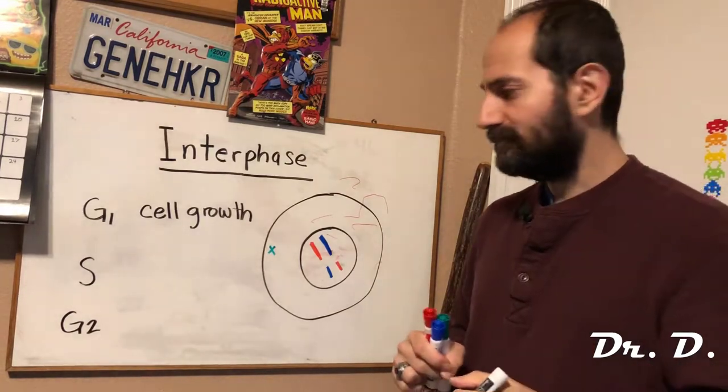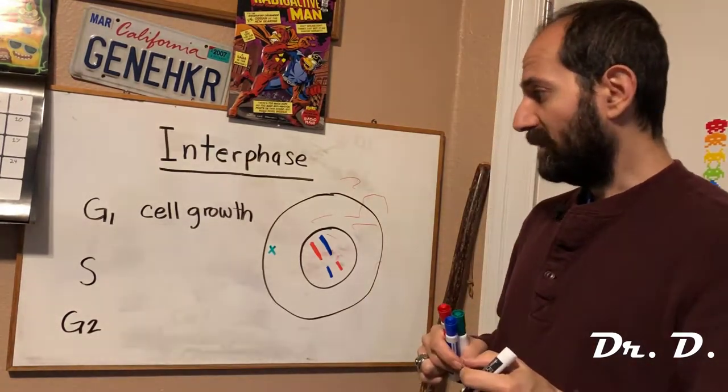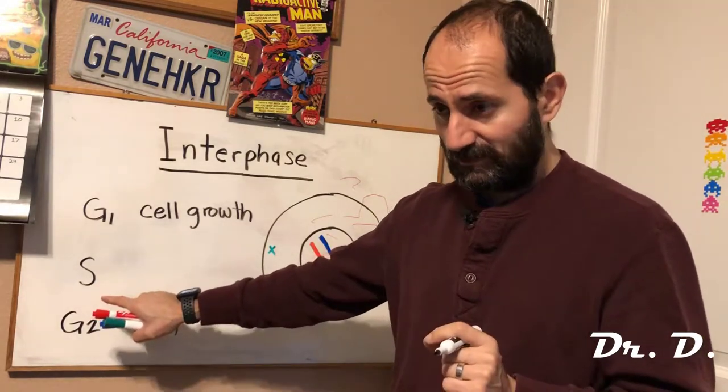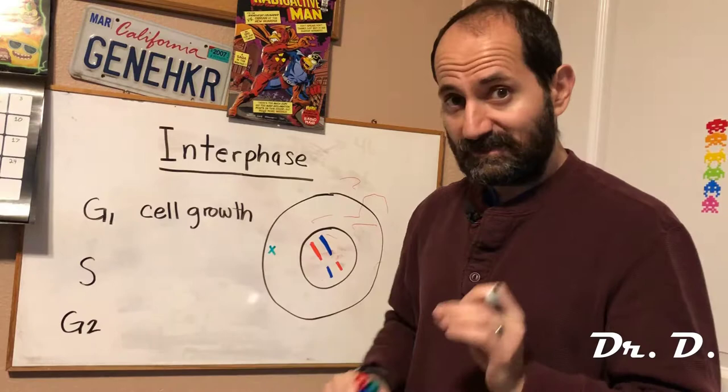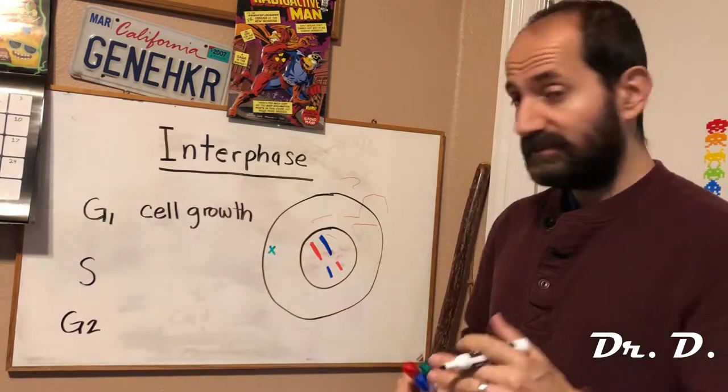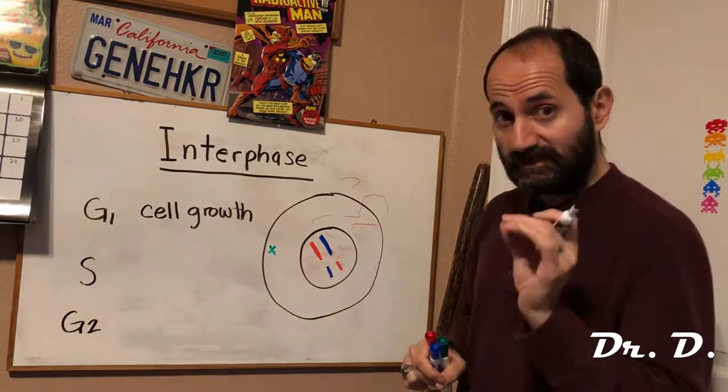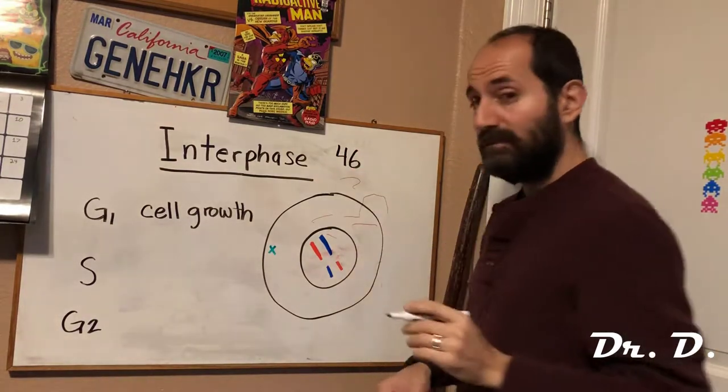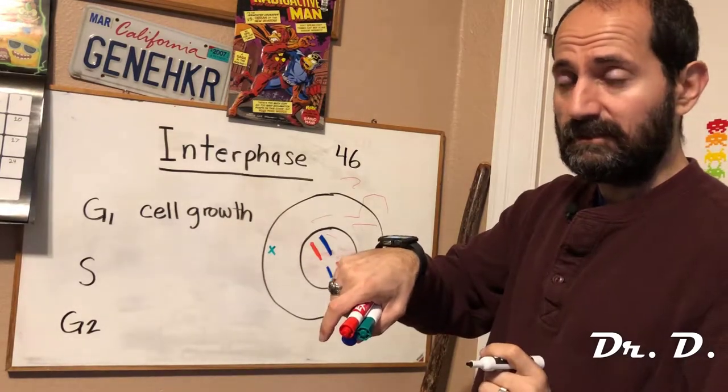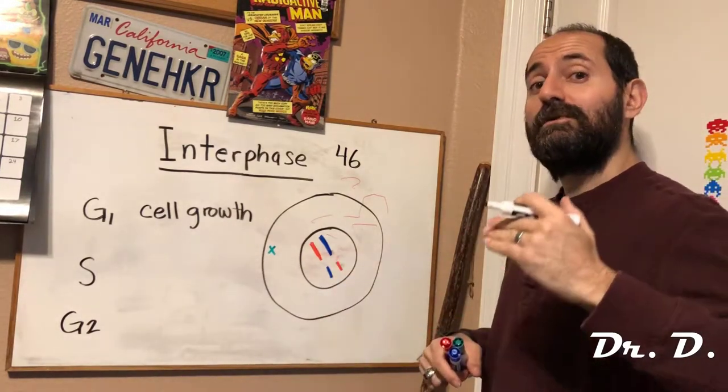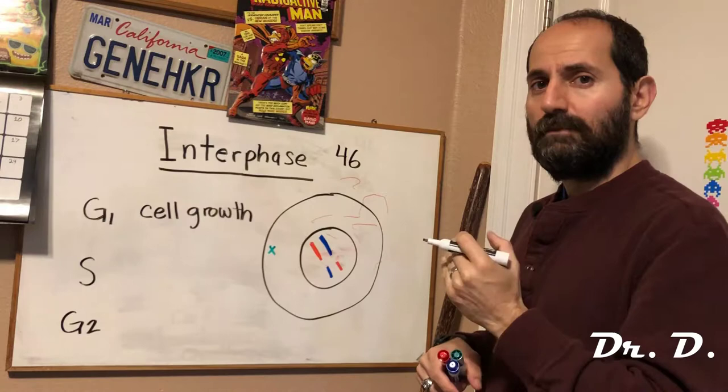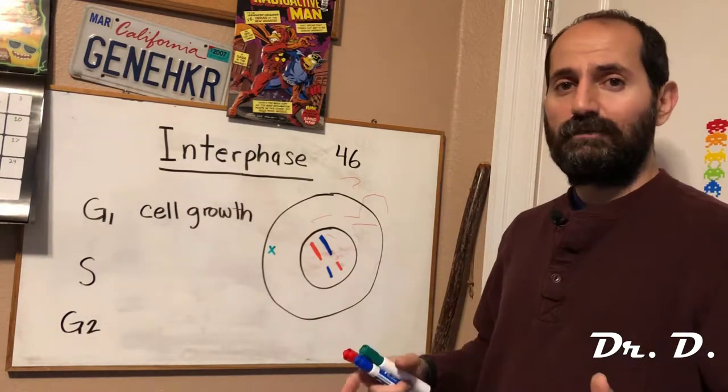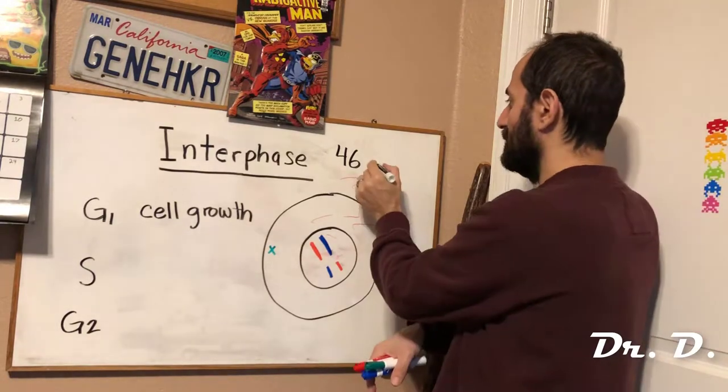At this point you enter S phase of interphase. This is called synthesis phase. And what you're synthesizing is DNA. At this point a cell will take its 46 chromosomes—remember each human cell has 46 chromosomes inside—at this point you will copy each and every chromosome. Make a carbon copy of each and every chromosome in a process called DNA replication. So you're going to end up with 92 total chromosomes.